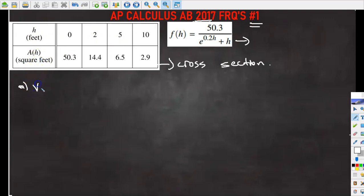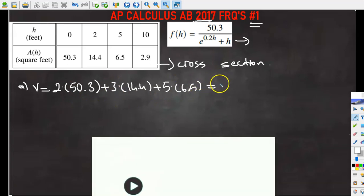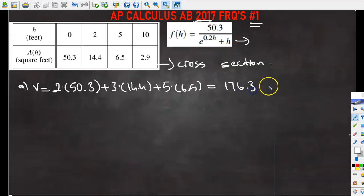So part A we're going to approximate the volume using the left Riemann sum and that's going to be equal to volume equals 2 times 50.3 plus 3 times 14.4, and I'm always using the left endpoints, plus 5 times 6.5. So if I calculate and algebraically simplify, the answer is going to be equal to 176.3 cubic feet.